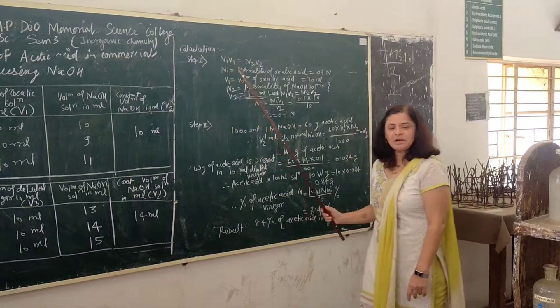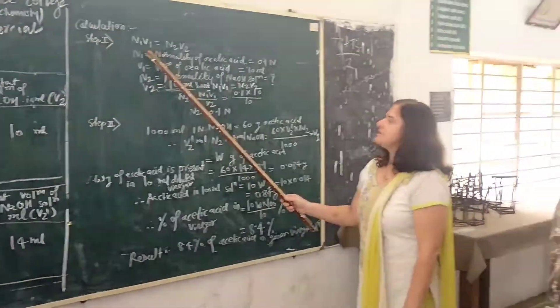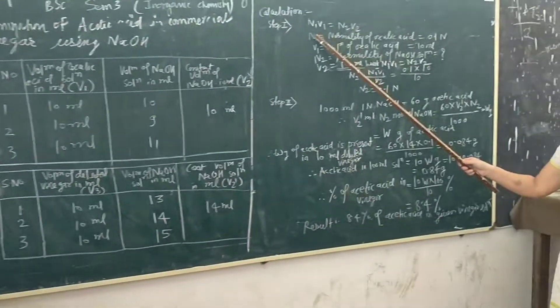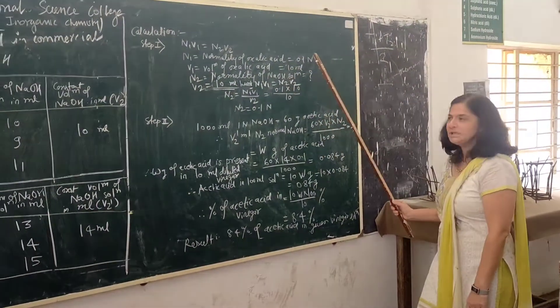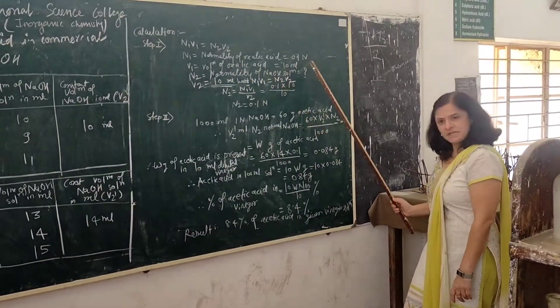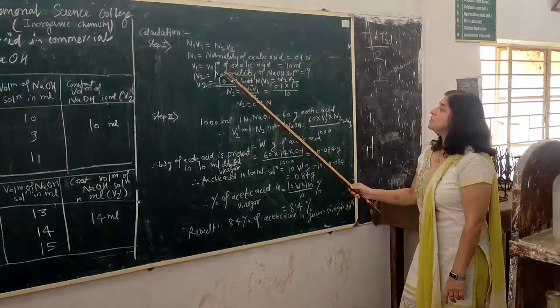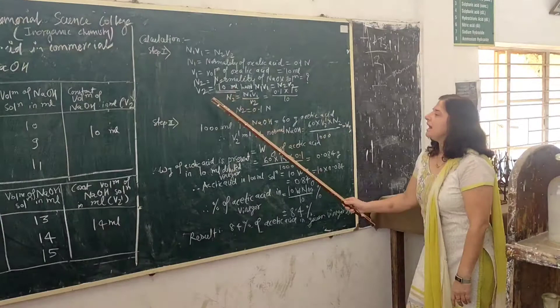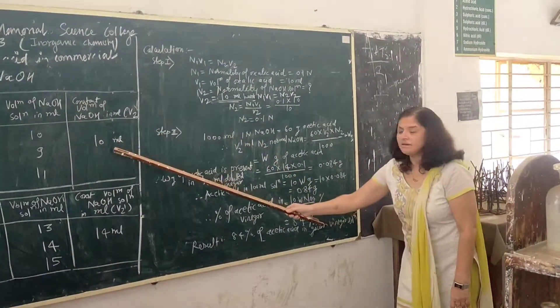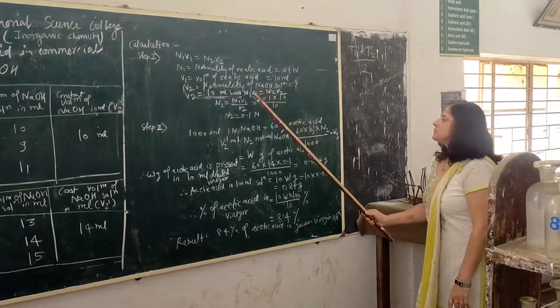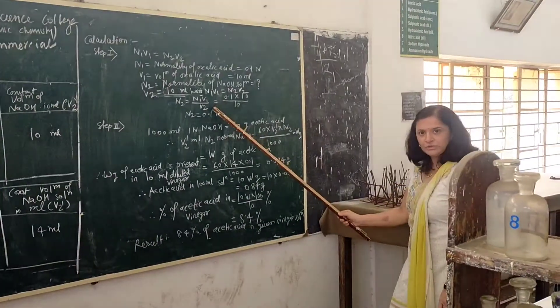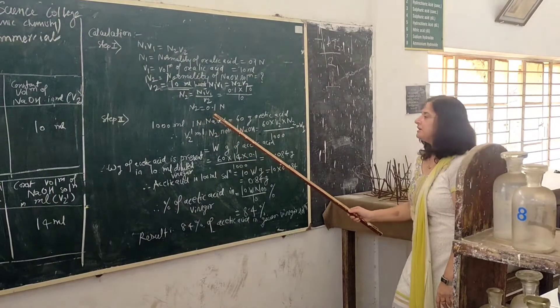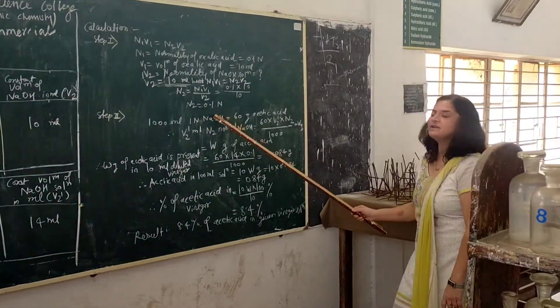Now, the calculation part. From step 2, using the formula N1V1 = N2V2: N1 is the normality of oxalic acid = 0.1 N, V1 is the volume of oxalic acid = 10 ml, N2 is the normality of NaOH (to find), and V2 is the burette reading = 10 ml. Substituting the values: N2 = (N1 × V1) / V2. The exact normality of NaOH solution is calculated as 0.1 N.